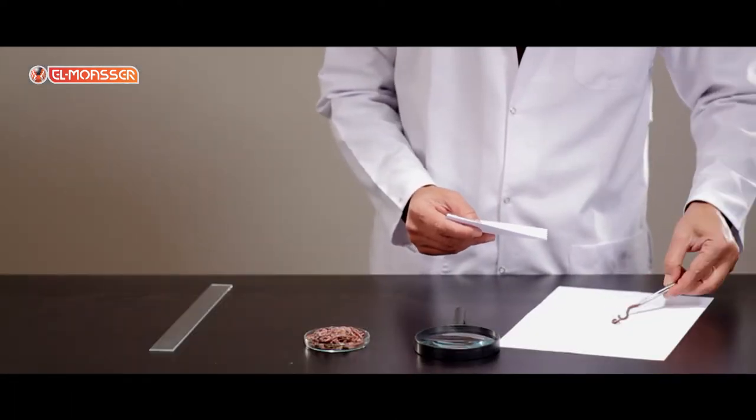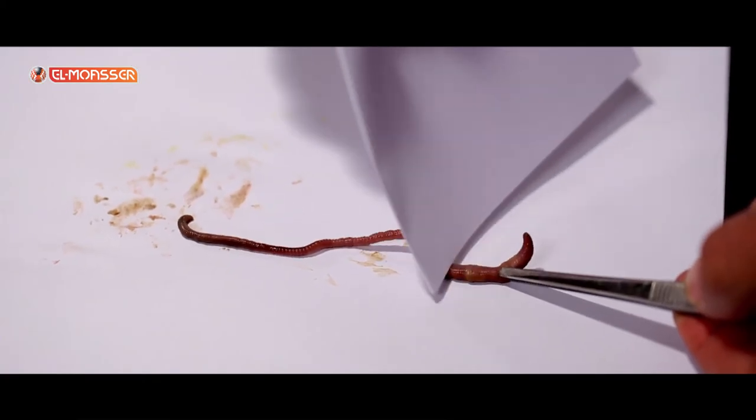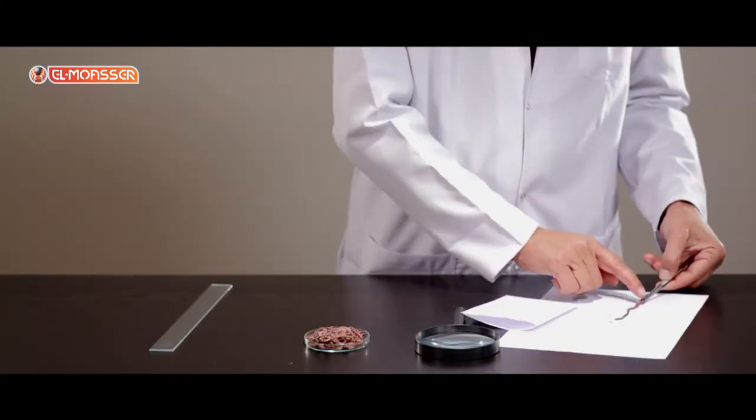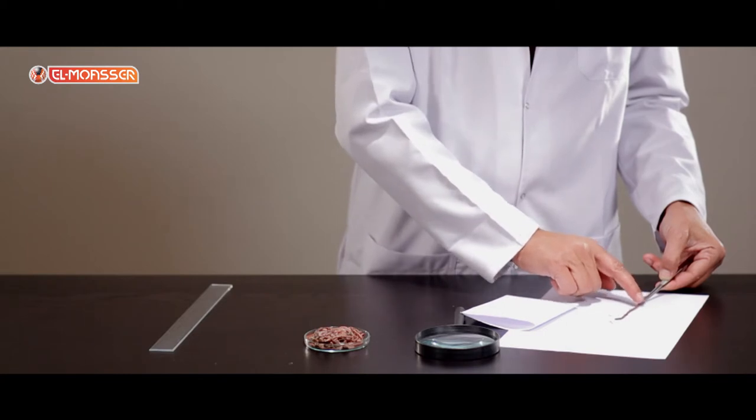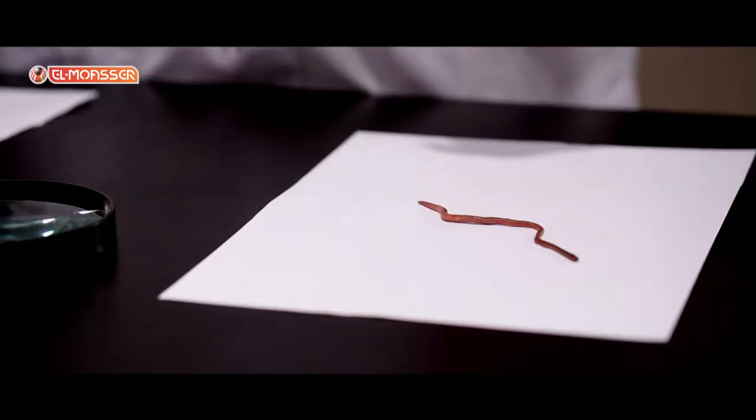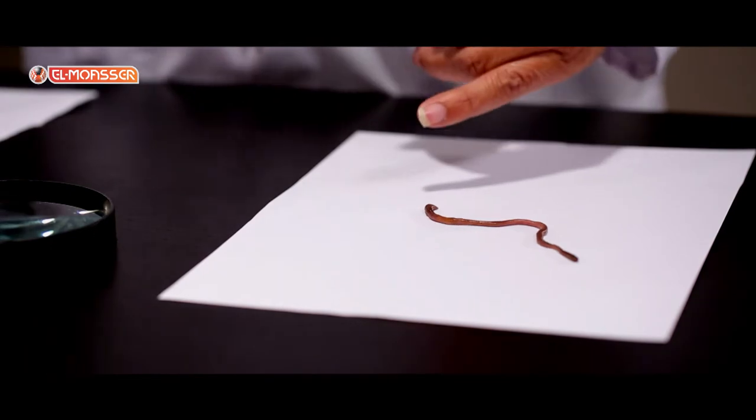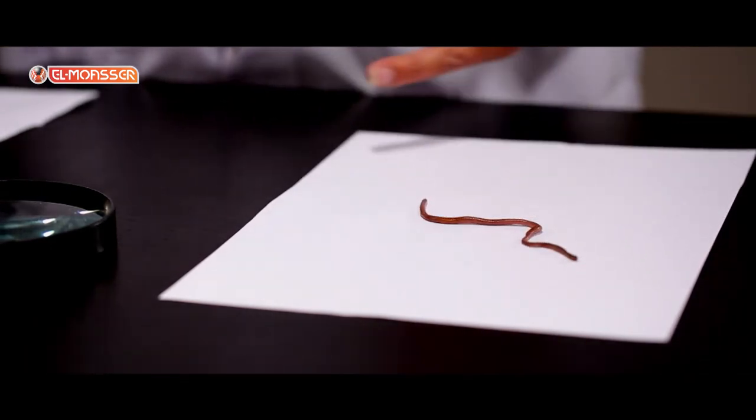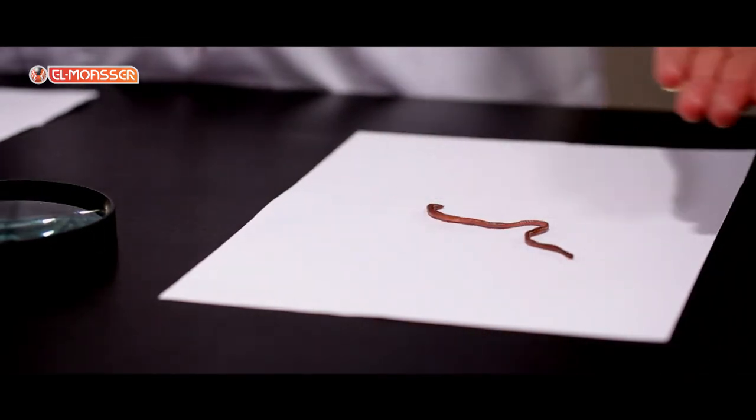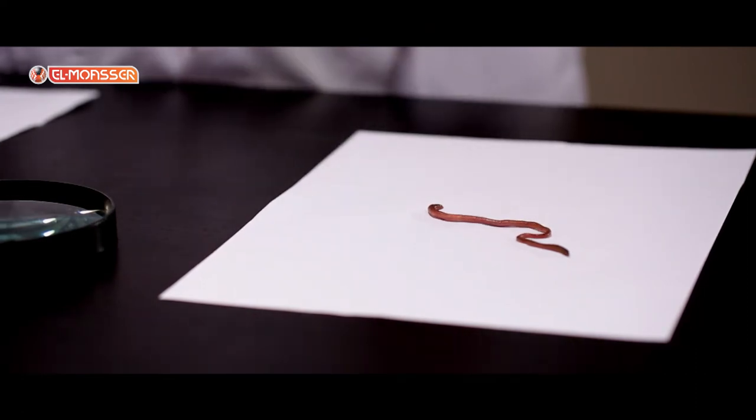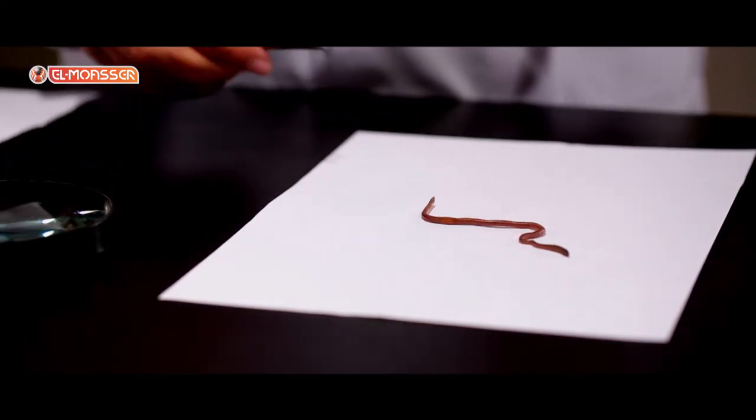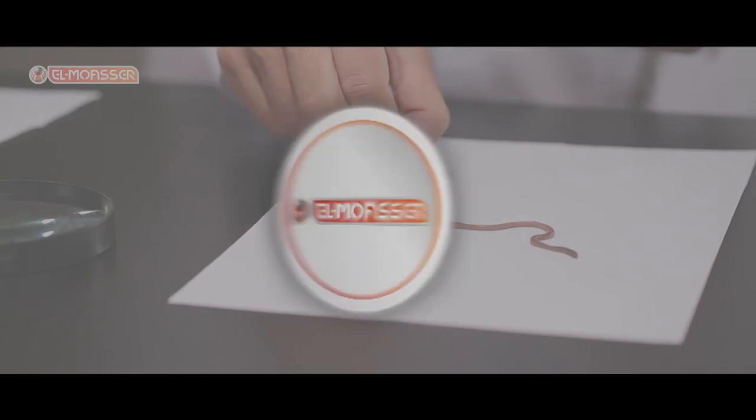Examine the ventral surface of the worm and pass a paper or your finger on it from the back to the front. There are setae on the ventral surface. These setae cause friction with the surface of paper and you can hear the sound of this friction. The worms are moving by the help of these setae.